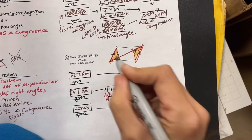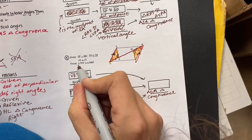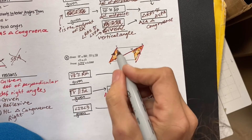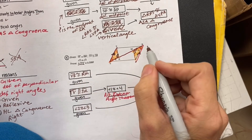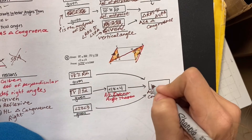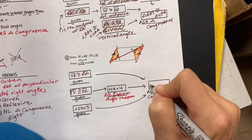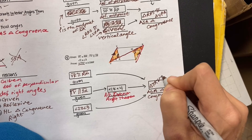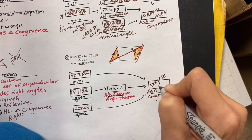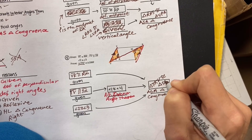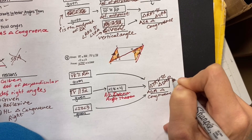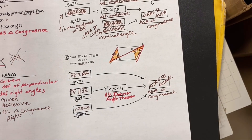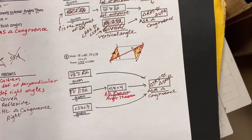The two triangles are right here: TKV and SMR. So triangle TKV is congruent to triangle SMR. Thanks for joining us — have a great weekend.